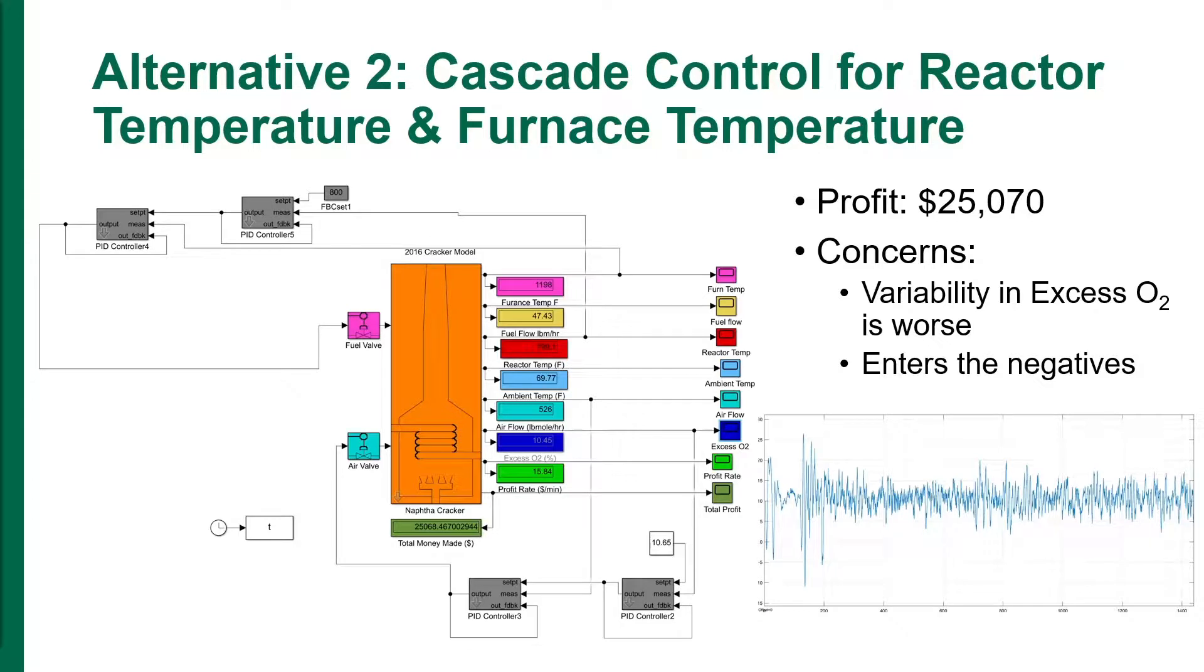The profit was $25,070. The profit was actually lowered, and the excess O2 resulted in the negatives. This was a very inefficient control scheme.